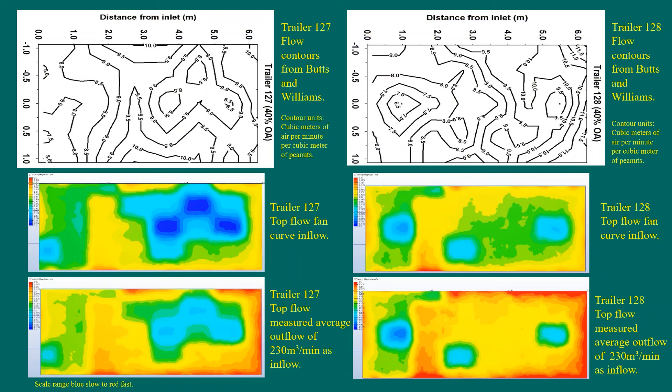The reported contours of the flows for trailers 127 and 128 are shown at the top. The model results from trailer 127 seen on the left show slower flow velocity areas in blue near the inlet and three areas near the end wall as well as the intermediate velocity area shown in yellow projecting up from the lower sidewall which reproduce the contours seen from the Butts and Williams paper for both the fan curve and the outflow inlet conditions. The trailer 128 flow contours were well matched by the model results.